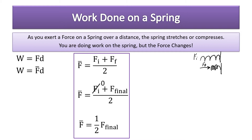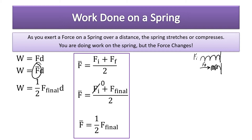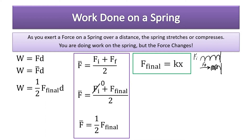So we're replacing the average force with one-half of the final force because that force varies. This is the Hooke's law equation — the final spring force.